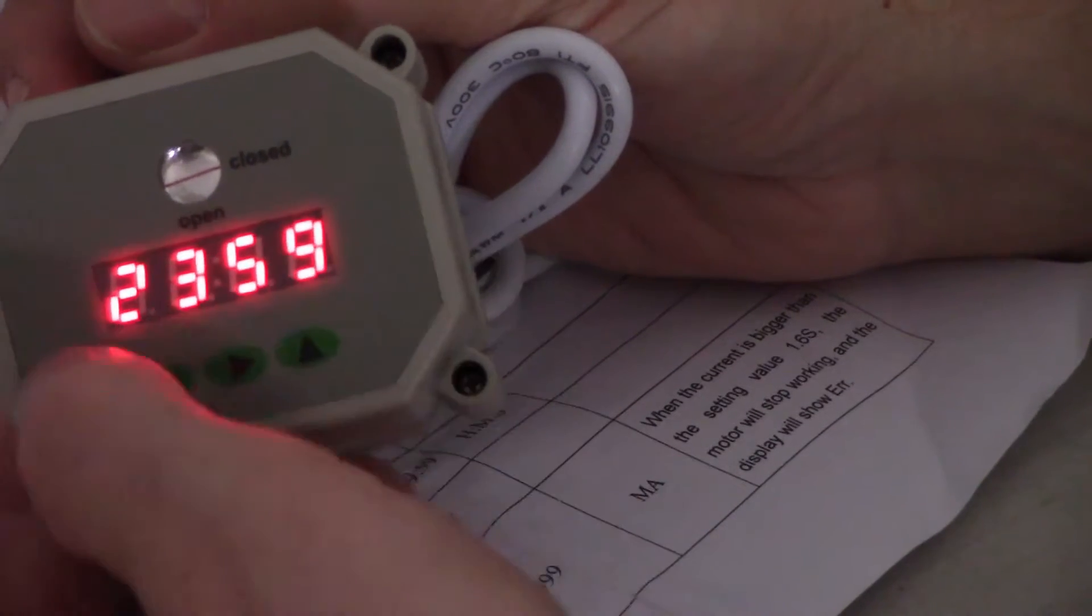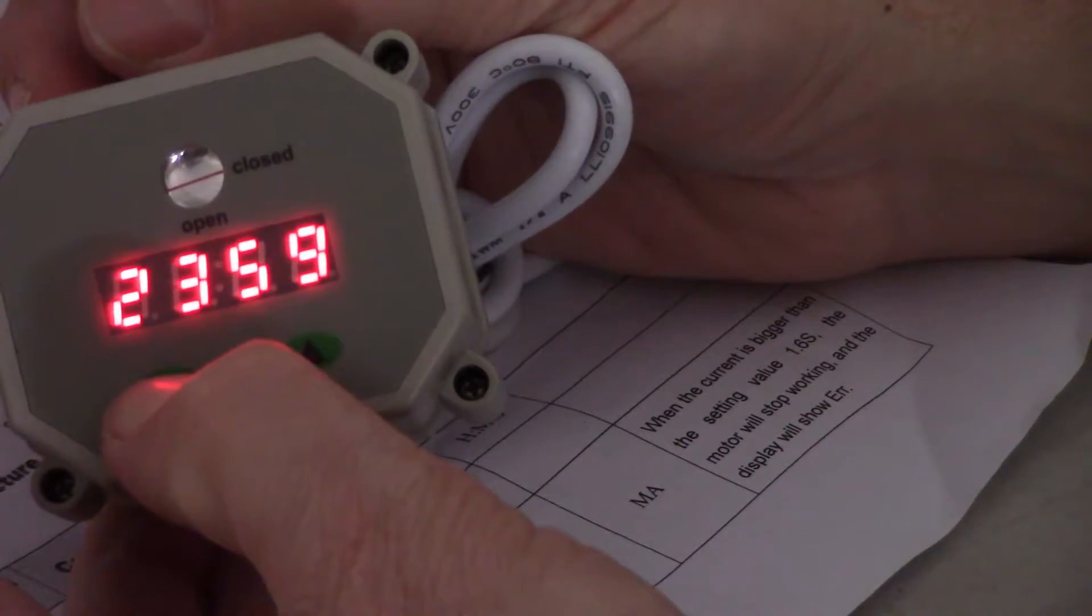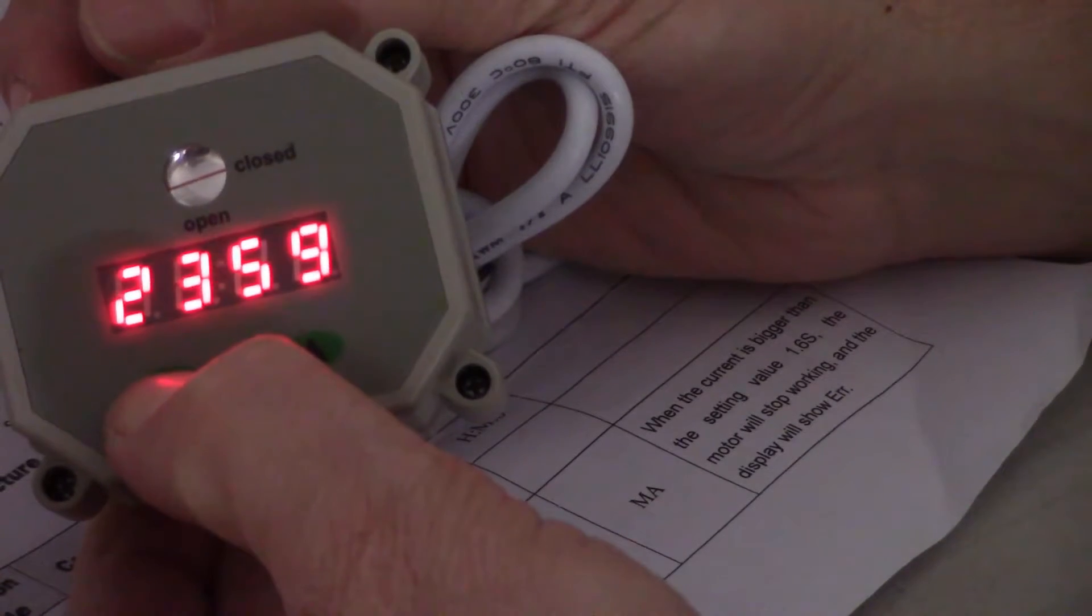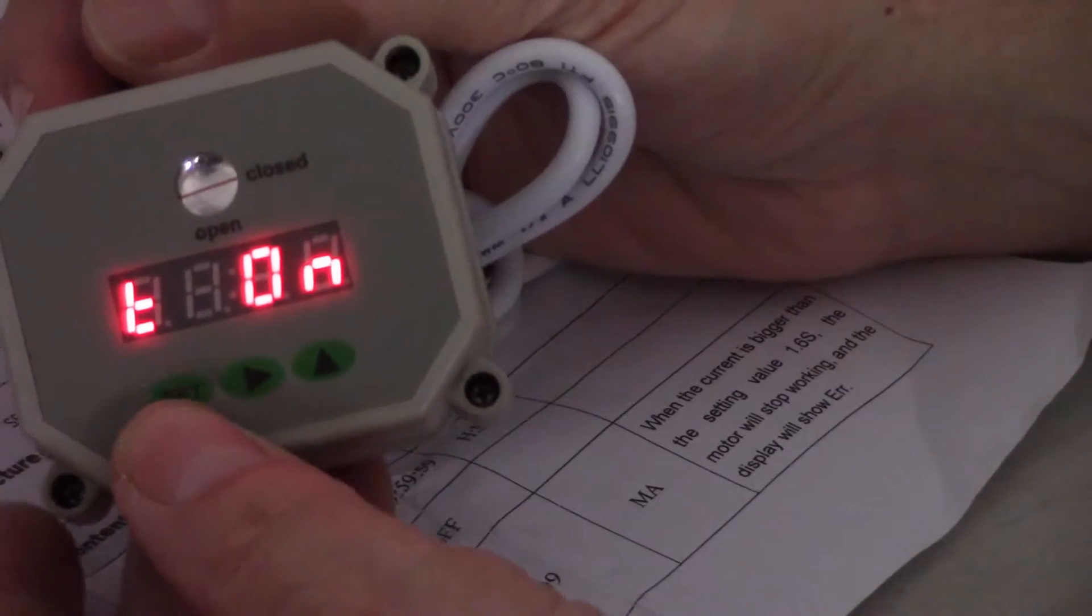So back to getting to where you can program the 24 part. You're going to start off by hitting the set button for a couple of seconds. You've got your T on, the time the valve is on. We've already set that.